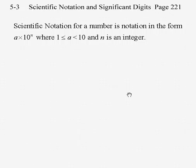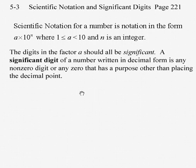We're taking a slight detour from standard number 7 as we cover chapter 5, section 3. We're going to talk about scientific notation and significant digits. Scientific notation for a number is written in the form a times 10 to the nth power, where a is a number greater than or equal to 1 and less than 10, and n is an integer — meaning it could be positive or negative, now that we know what negative exponents do.